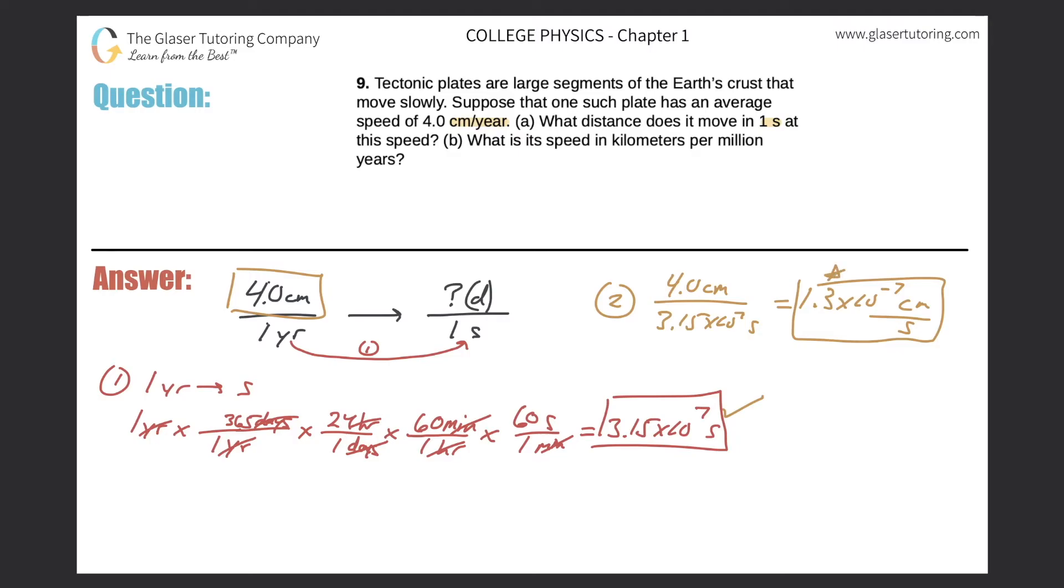And now it asks us, okay, so that's A, and then it asks us now to find its speed in kilometers per million years. Okay, so basically what I want to do is I'll write part 2, or this is really step B. Now what I'm going to be thinking about is I'm given the value again of 4 centimeters per one year, and now what I need to do is I need to find the speed in kilometers per million years. Okay, so three-step process. It's going to be slightly different than the processes we usually do. First, let's take the centimeters and convert it into kilometers.